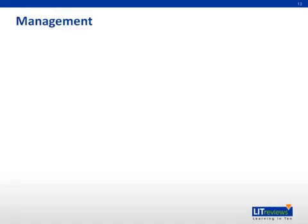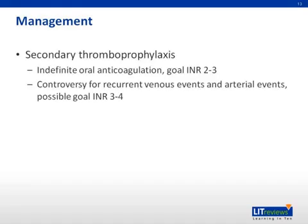Now we are going to discuss the management of APS. We will use the term secondary prophylaxis as the patient by definition has already suffered a thrombosis or pregnancy complication. Patients with antiphospholipid antibodies are not anticoagulated in the absence of a clinical manifestation such as an adverse pregnancy outcome or a clot. You must first manage vascular risk factors such as encouraging smoking cessation, stopping estrogen in females on oral contraception, and reducing cholesterol. A patient will need indefinite anticoagulation with a goal INR of 2 to 3. Currently, most patients are managed with warfarin long term. Some patients develop thrombosis despite anticoagulation with warfarin, and further management of these patients is controversial, though many recommend a higher goal INR of 3 to 4.